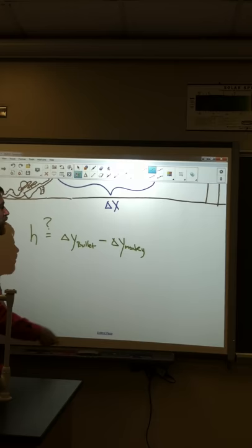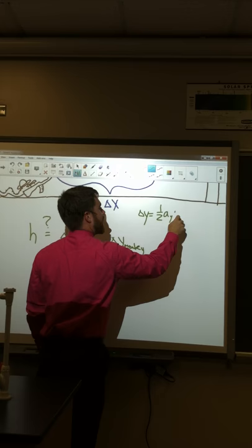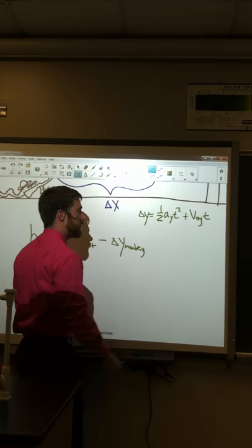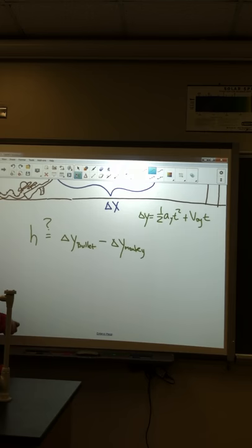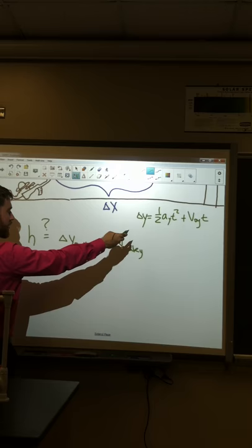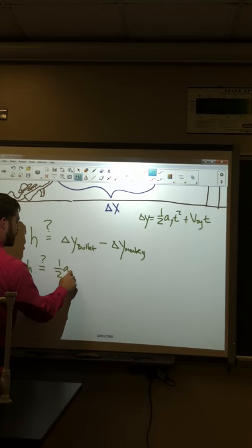So let's think about what these change in positions would be. We know that change in position is equal to one half a t squared plus v naught t, where the a and the v over here are the a and the v in the y direction. So let's plug that in for the bullet and the monkey. Is height equal to these two things? Well, for the bullet, there is an initial velocity in the y direction, so for the bullet we have this.